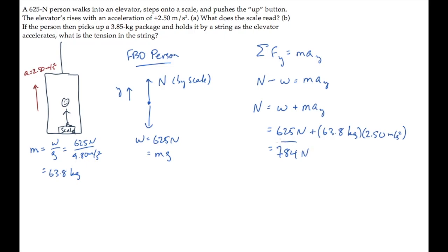Part B says the person then picks up a package with some mass and holds it by a string, and it asks us what the tension is in the string. We'll start finding this by drawing a free body diagram of the package. There are two forces on it. The package has a weight equal to its mass times acceleration of gravity g, and there's a tension.